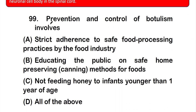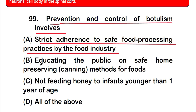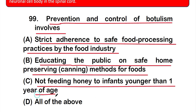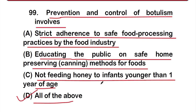Question number 99: Prevention and control of botulism involves — option A: strict adherence to safe food processing practices by the food industry, option B: educating the public on safe home preserving methods for foods, option C: not feeding honey to infants younger than one year of age, option D: all of the above. The correct answer is option D — all of the above are prevention and control measures for botulism.